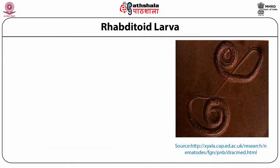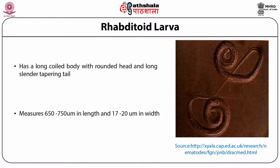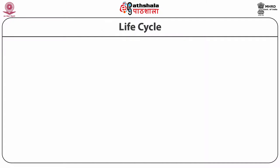Dracunculus medinensis is a viviparous worm that liberates larvae. The larva is known as rhabditoid larva. It has a long coiled body with a rounded head and long slender tapering tail. It measures about 650 to 750 µm in length and 17 to 20 µm in width.